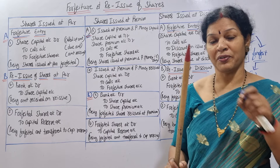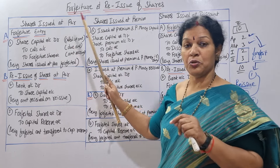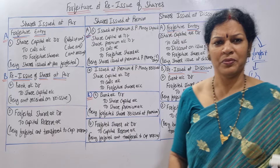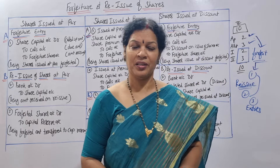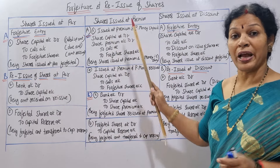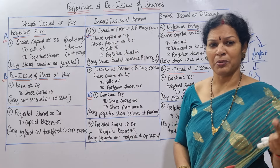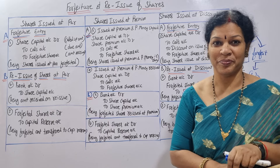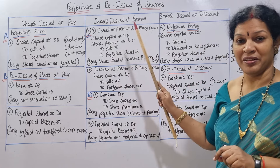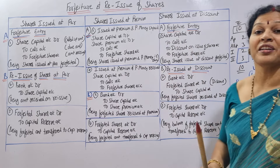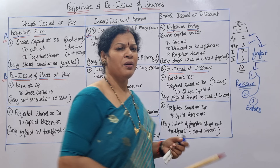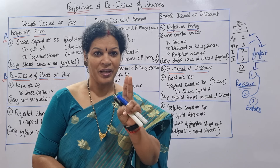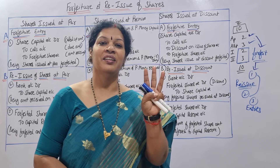For forfeiture and reissue, I am taking three stages. One: shares issued at par - par means same value, 10 rupees share value, 10 rupees we issue. Two: shares issued at premium - par value is 10 rupees but we issue for 12 rupees, the extra 2 rupees is premium. Three: shares issued at discount - par value is 10 rupees but we issue for 9 rupees, 1 rupee discount.